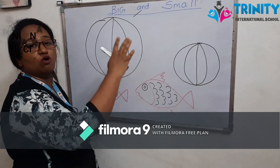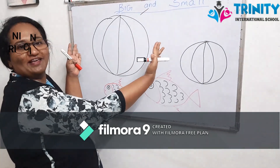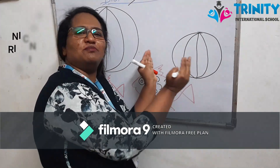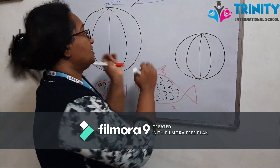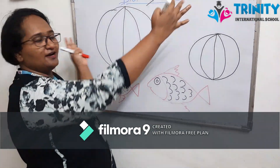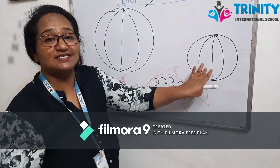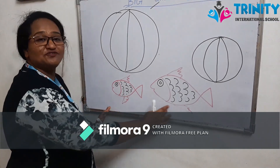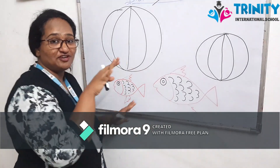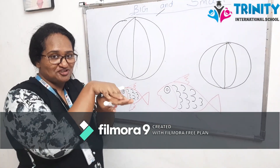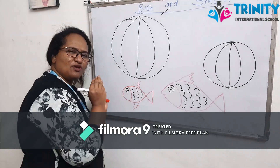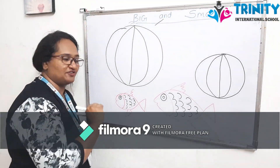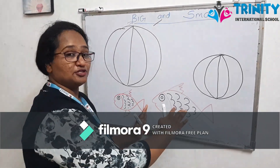So now we have more objects. See, this is a ball — a big ball. And this is a small ball. This is big and this is small.